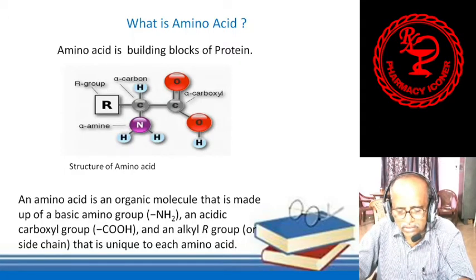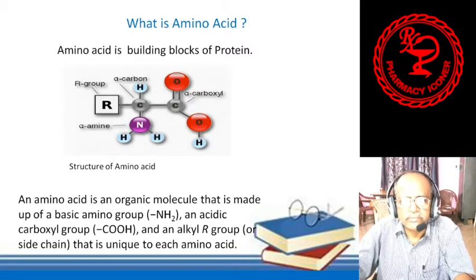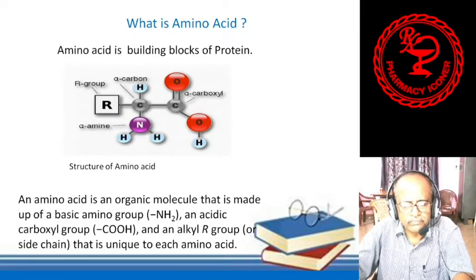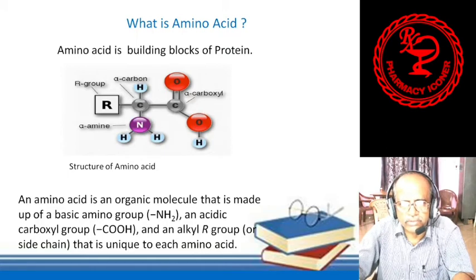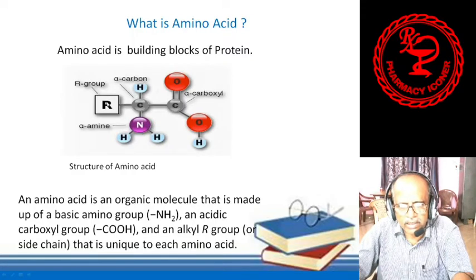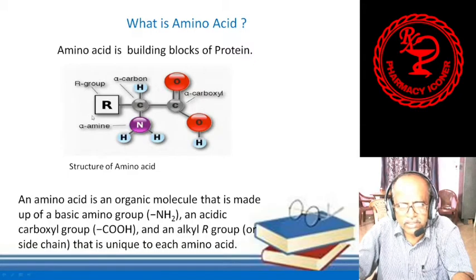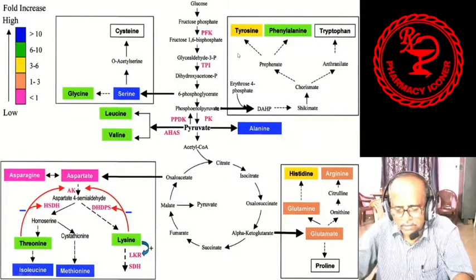Amino acid is a building block of protein, because when protein is being digested, amino acids are formed. After the formation of amino acids, they are absorbed by the body and mix with the blood. An amino acid is an organic molecule made up of a basic amino group, an acidic carboxylic group, and an alkyl R group with an attached side chain. This side chain gives each amino acid its unique structure.